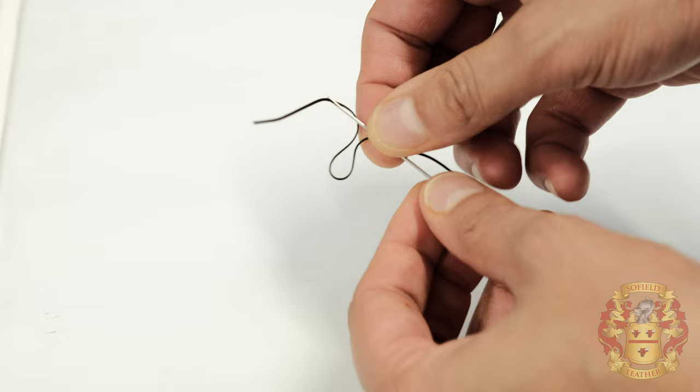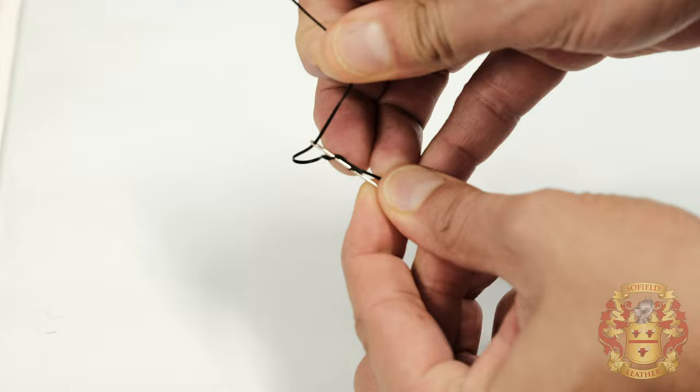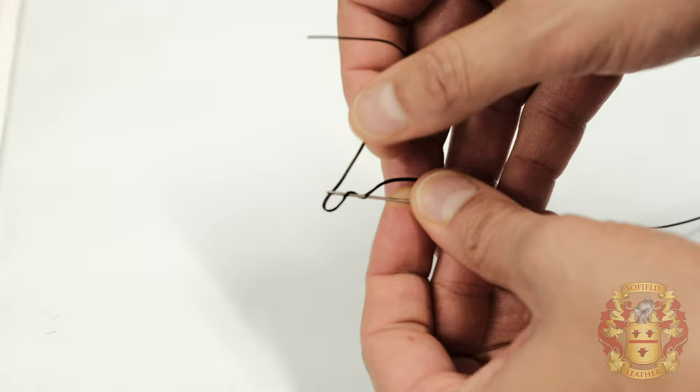Take this tab left over, the running end. Pull it out until this loop gets a little tighter, almost like the size of a pea. Right there.